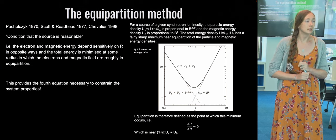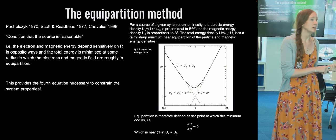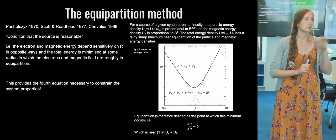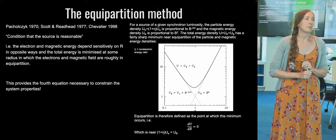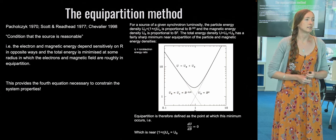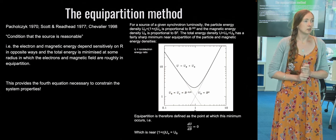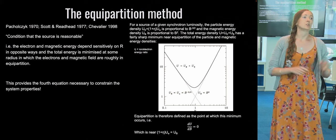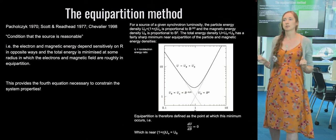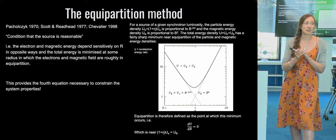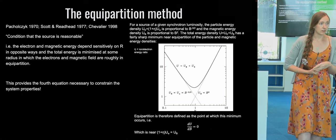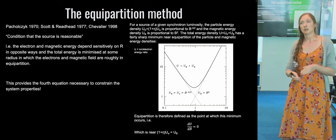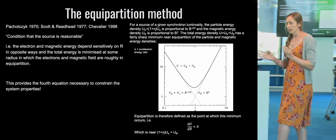For a given source with particle energy density u_e and magnetic energy density u_B, the total energy density u has a fairly sharp minimum. We solve for that minimum by taking the derivative du/dB and setting it to zero. This gives a relation between the energy in the magnetic field and the energy in the electrons — this is the equipartition equation we use to constrain the system.